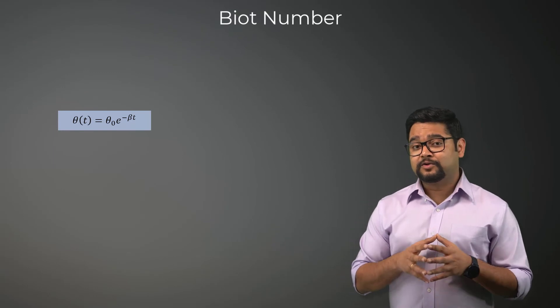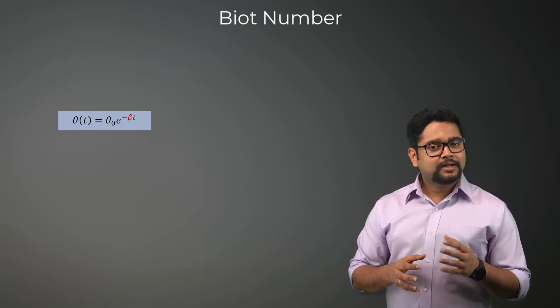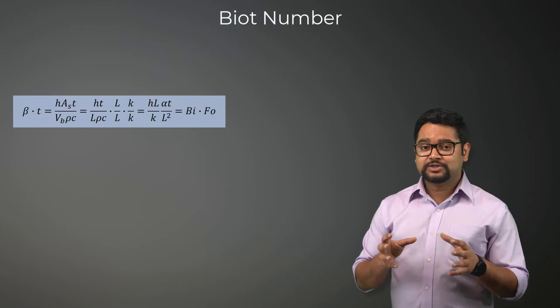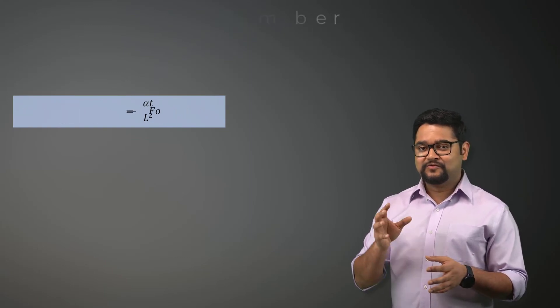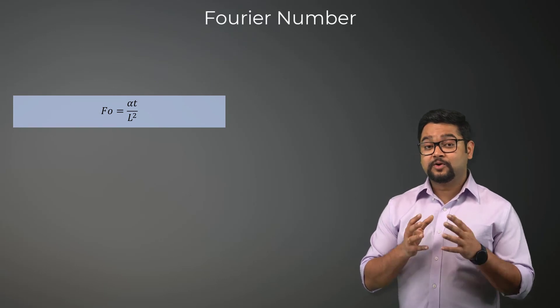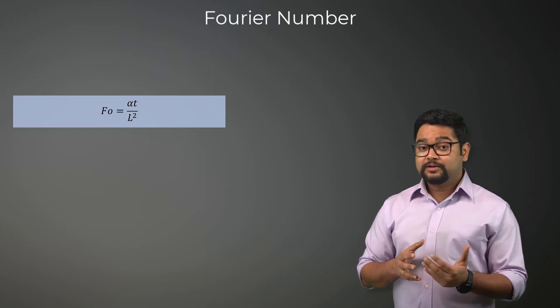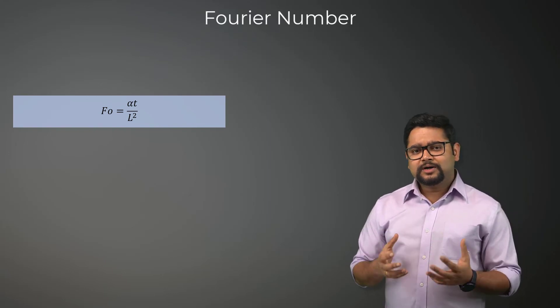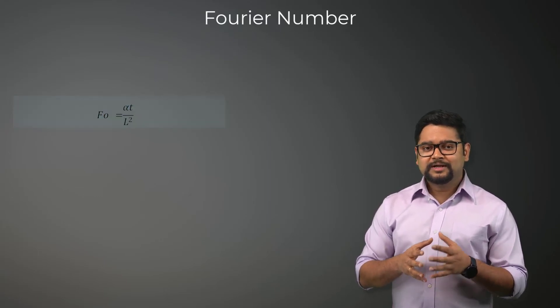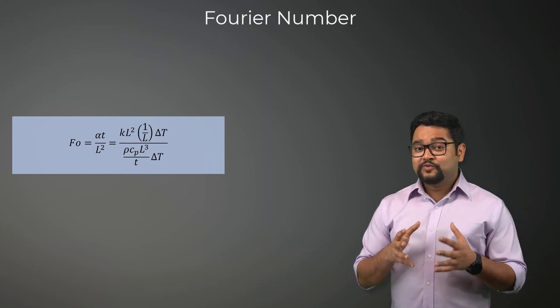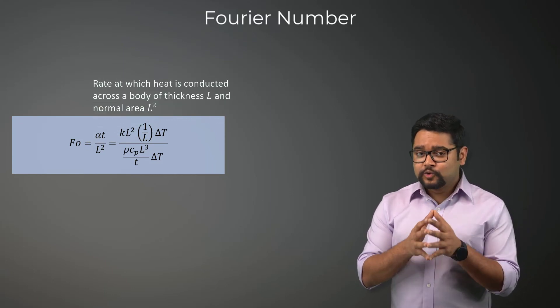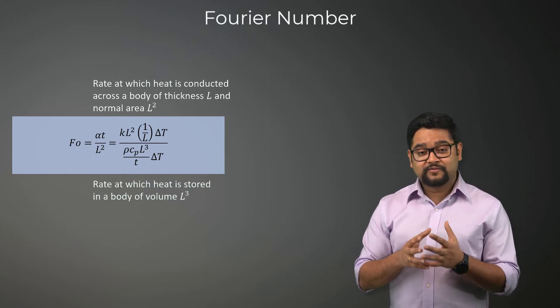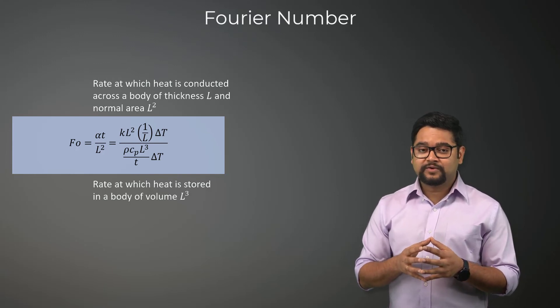The exponent of the non-dimensional lumped model equation can be rewritten as this, which after some rearrangement can be written as a product of two dimensionless numbers, the Biot number and the Fourier number. The Fourier number is a non-dimensional time parameter, which together with the Biot number is used to characterize unsteady conduction problems. To understand the physical significance of Fourier number, let's rearrange the expression a bit. As you can see, the Fourier number is a measure of heat conducted through a body relative to the heat storage inside the body. Thus, a large value of Fourier number indicates faster propagation of heat through the body.